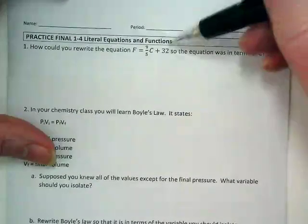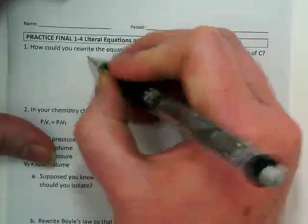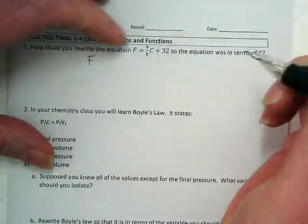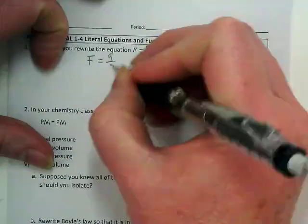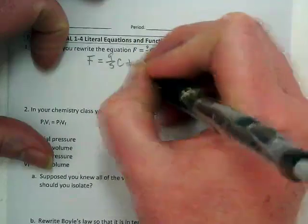So if I want to solve this for C, I'm going to rewrite this. By the way, this literal equation is for Fahrenheit, and the C is for Celsius. This is how the two temperatures are related to each other in the different systems.